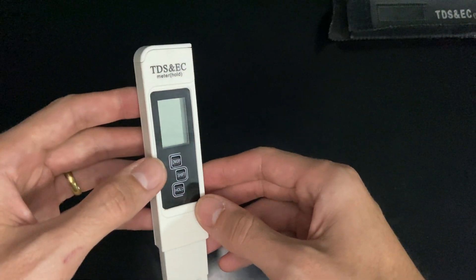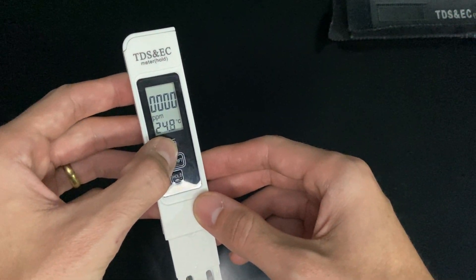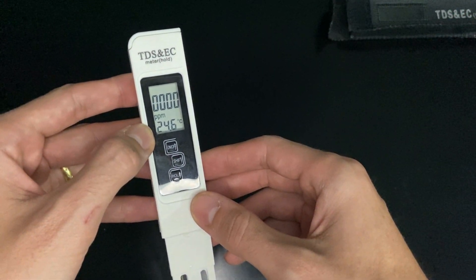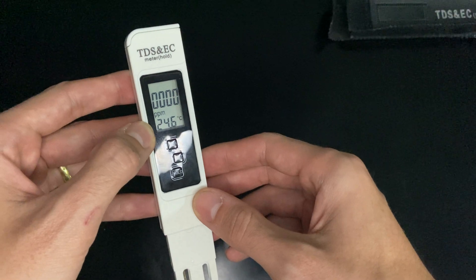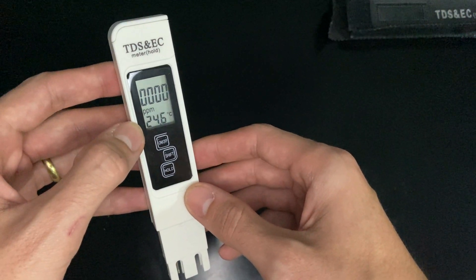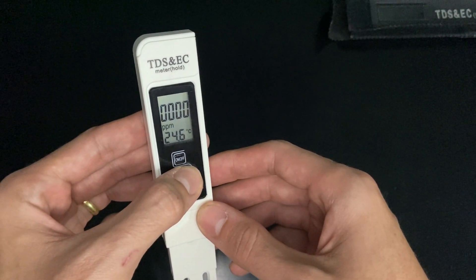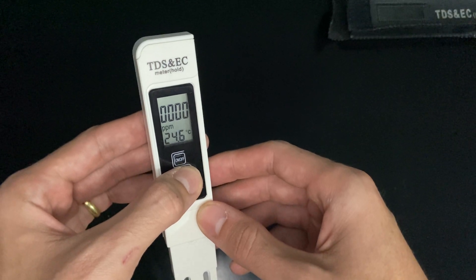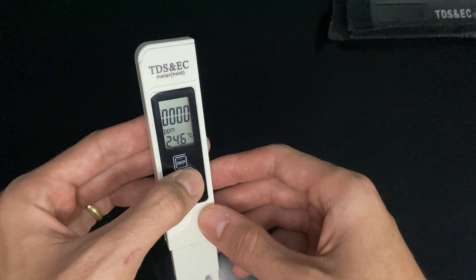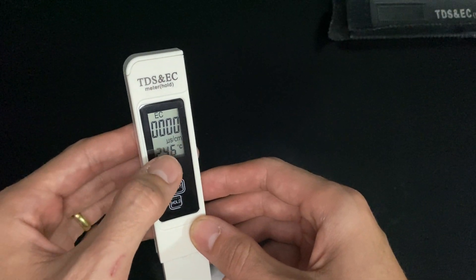Here we have three buttons: on/off. It also measures the temperature of the water and the environment. We have the shift button here because it also measures the electricity in the water, measured by microsiemens units.